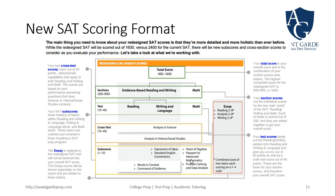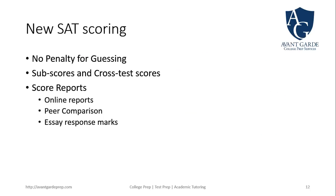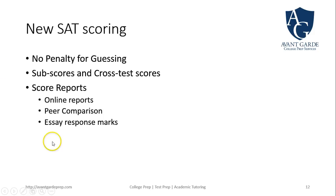For new SAT scoring: there's no penalty for guessing, and there are sub-scores and cross-test scores along with it. Score reports are available online to download as a PDF from College Board. You'll also get a peer comparison showing how you've done compared to others who've taken the SAT, and a projection of how you measure against peers nationally — including those who haven't yet taken the test. You'll also receive essay response marks so you can see how scorers evaluated your essay and how to improve.